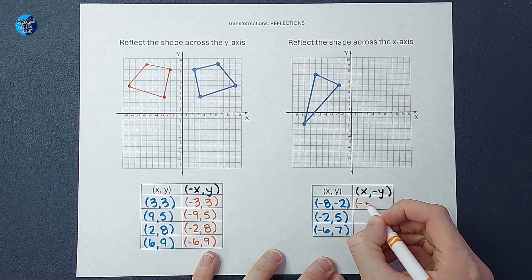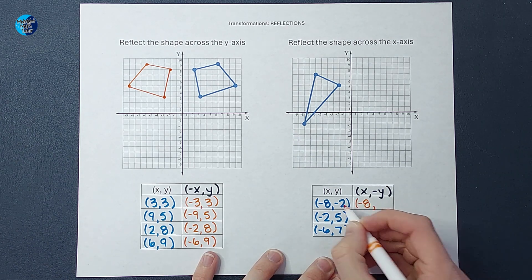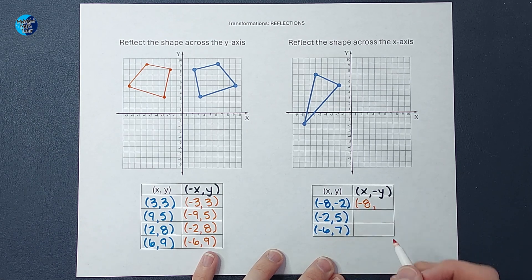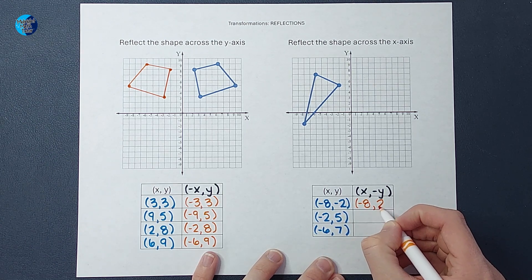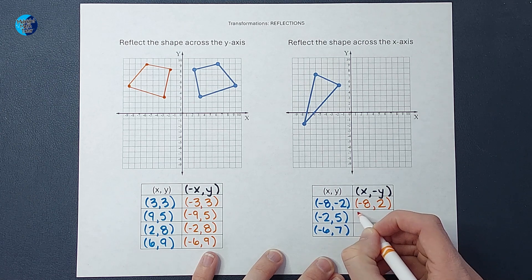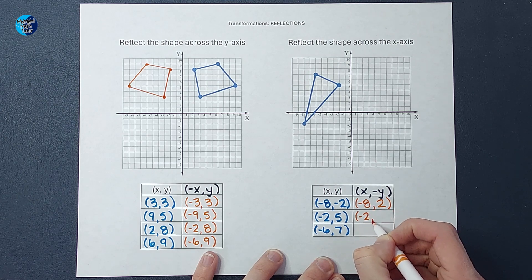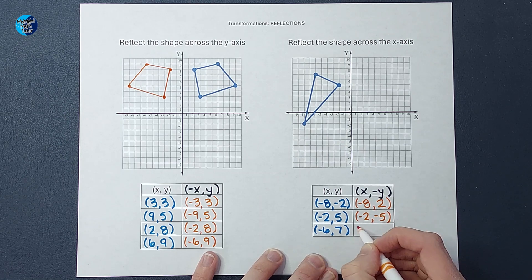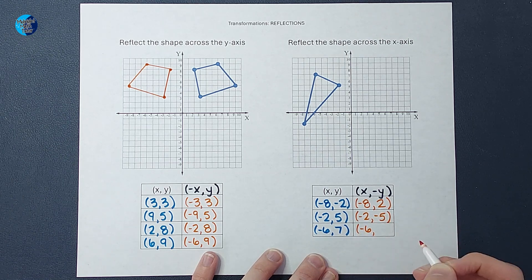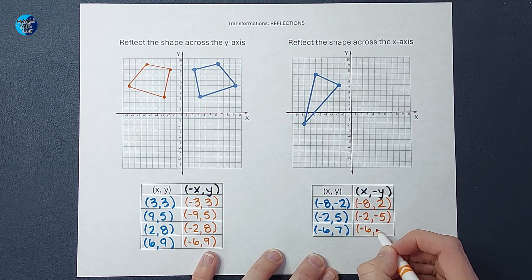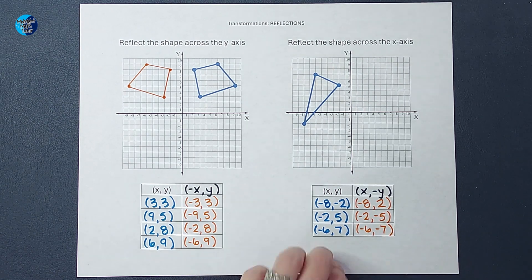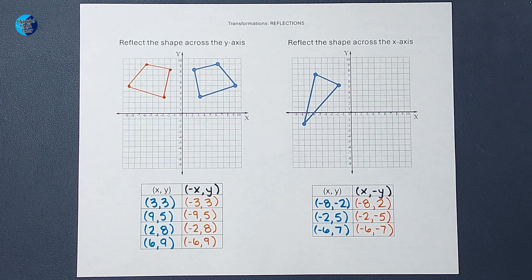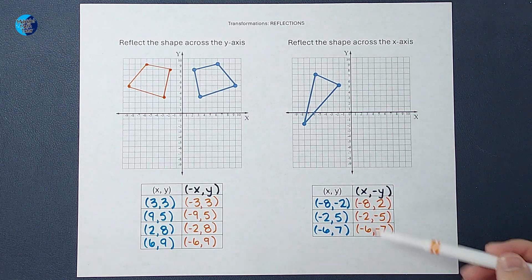Now I'm just going to change y's sign. So my x is going to stay the same, negative 8. Since 2 is negative here, I'm going to change the sign and have it be a positive 2. I'm going to have negative 2 stay the same, and I'm going to change my positive 5 to a negative 5. Negative 6 is going to stay the same. We're going to change that positive 7 to a negative 7.